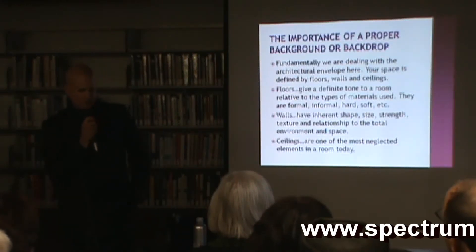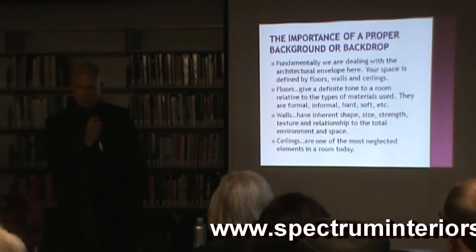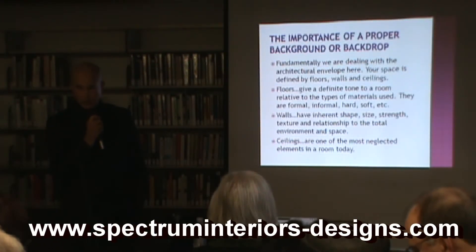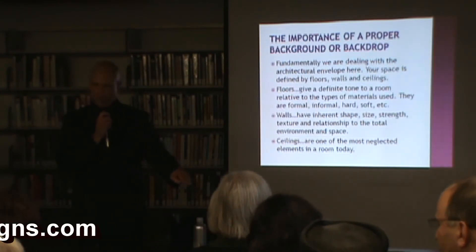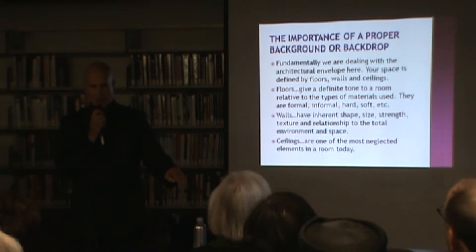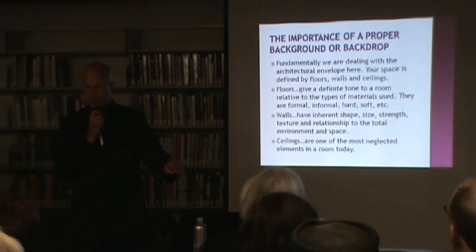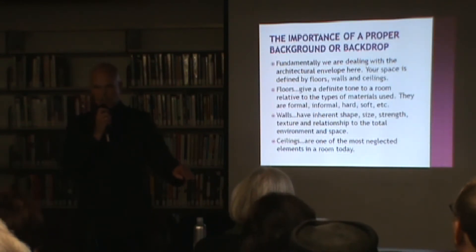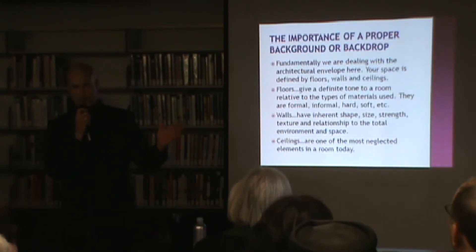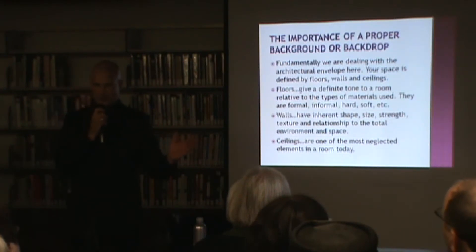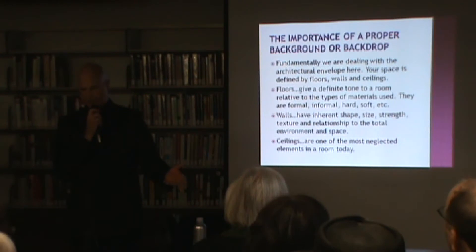The importance of proper backdrop — as I said before, we're dealing with fundamentally architecture: walls, floors, and ceilings. Each one has a different tone. Take the floor: it can be marble, it can be slate, it can be carpet, it can be original carpet. Walls can be paint, wall carving, fabric, murals, bow finish. And for the most part you can do the same kind of thing with ceilings.